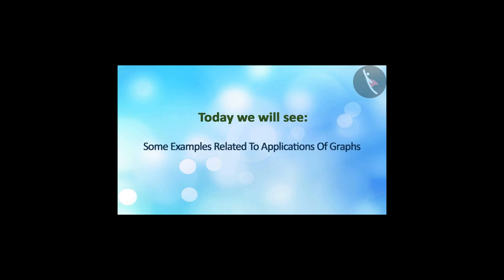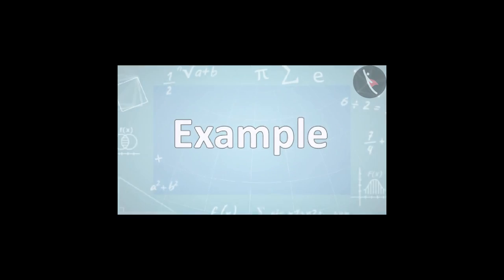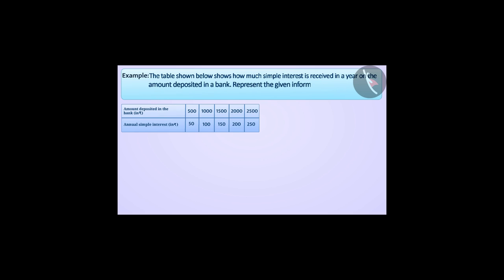Today, we will see some examples related to applications of graphs. The table shown below shows how much simple interest is received in a year on the amount deposited in a bank. Represent the given information in the form of a graph using appropriate scale. The annual interest paid by the bank depends on the amount deposited, so the amount deposited is the independent variable and simple interest is the dependent variable. Let us draw a graph using the table shown.